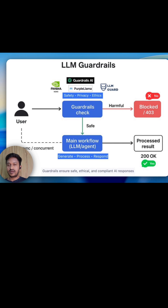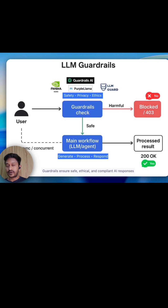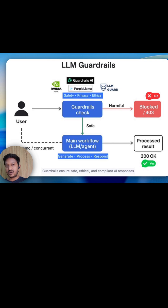Think of guardrails like a safety barrier on the highway. They don't stop you from driving, but they prevent you from going off the road and crashing, which is very important. LLM guardrails work the same way — they sit between the users and the AI models, checking everything that goes in and also out of the system.